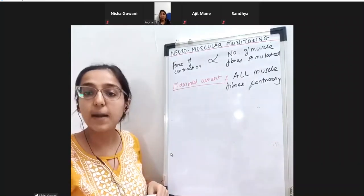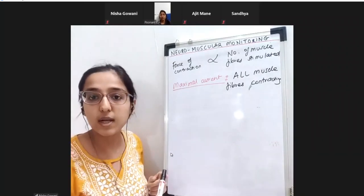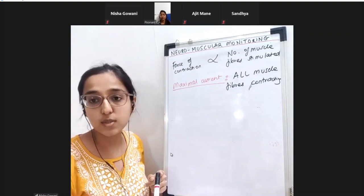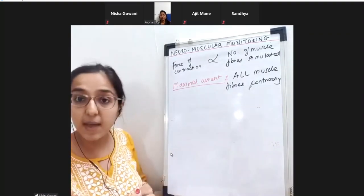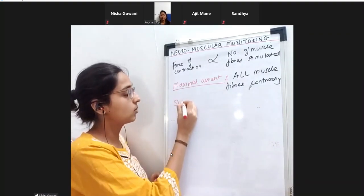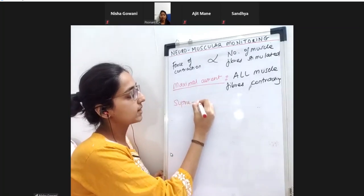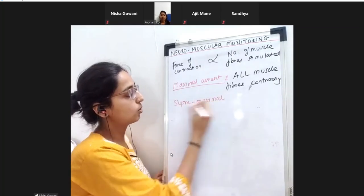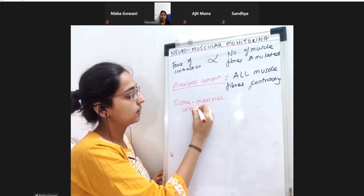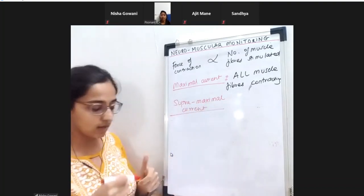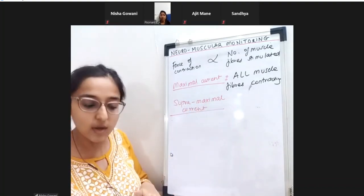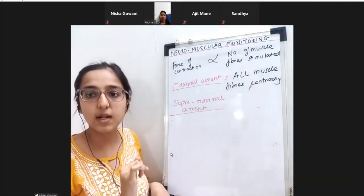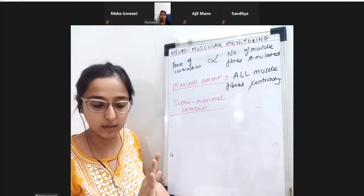When we are practicing neuromuscular monitoring in a patient undergoing general anesthesia, we choose something known as supra-maximal current - not maximal, but above maximal, which is supra-maximal current. It is a little above the maximal current.